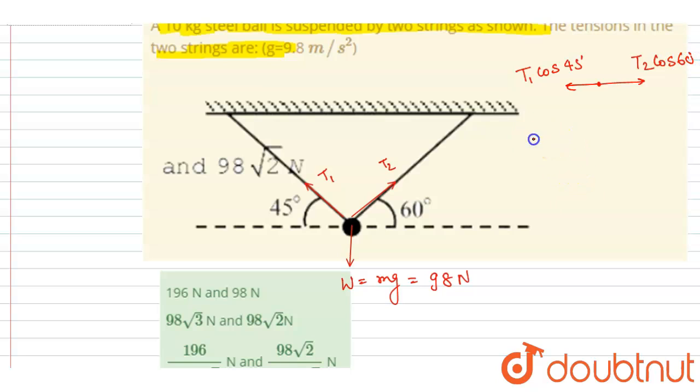So I will write cos 45, it will be this, and it will be equals to cos 60, that is this. From here you can see you got T2 is equals to T1 root 2. If you cross multiply this 2, you'll get this relation.